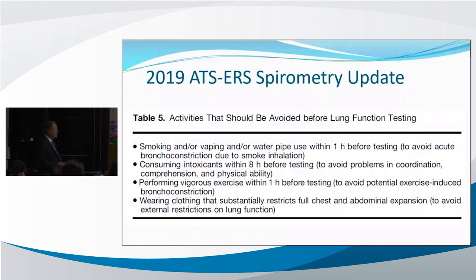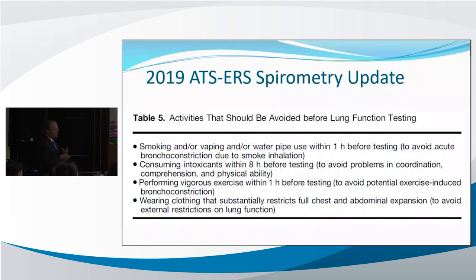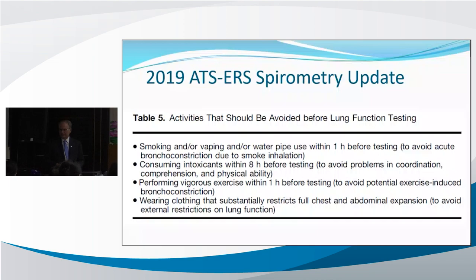Bullet points 2 and 3 are really related to other lung function tests — how they affect diffusing capacity and bronchodilator response. The important ones related to spirometry are bullet 1 and 4.